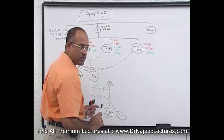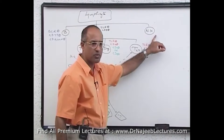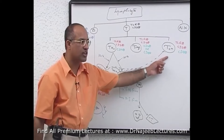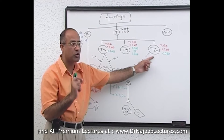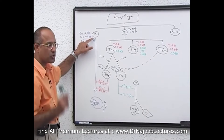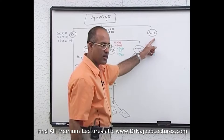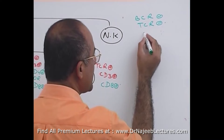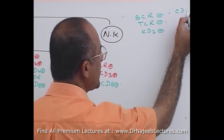Natural killer cells are called so because they naturally kill without needing specificity. T helper and T cytotoxic cells are activated only with a specific antigen via TCR, and B cells via BCR. But natural killer cells are non-specific in their killing action. Therefore, they are BCR negative, TCR negative, CD3 negative, and CD19/20/21 negative.